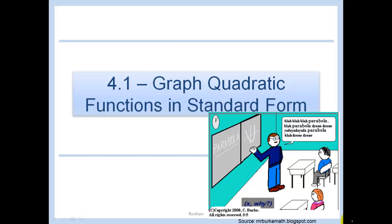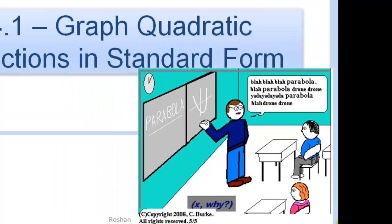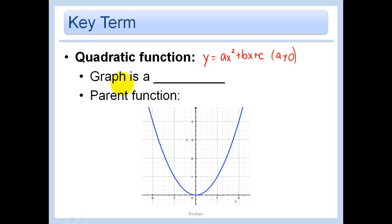4.1 Graph Quadratic Functions in Standard Form. This comic is a little bit appropriate for the lesson today — some of what I'm going to say is just not going to make total sense right now. We'll work through it in class, and this whole chapter is about quadratics. A quadratic function can be written as y equals ax squared plus bx plus c, where a cannot equal 0, because then it would just be a linear function.